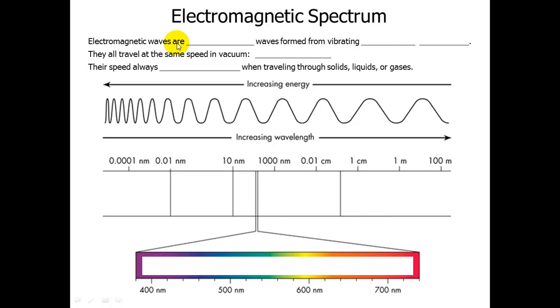If you want to make electromagnetic waves, you need to have a vibrating electric charge, like an electron that goes up and down. And that will create a transverse electromagnetic wave. So these waves are transverse and they are formed from vibrating electric charges.